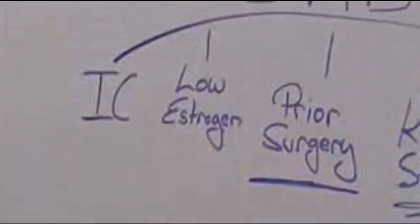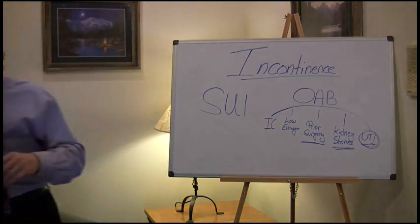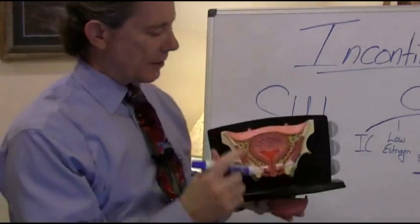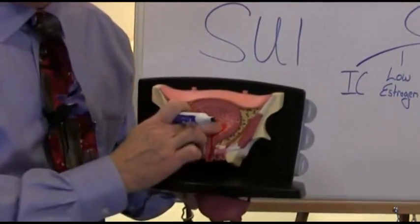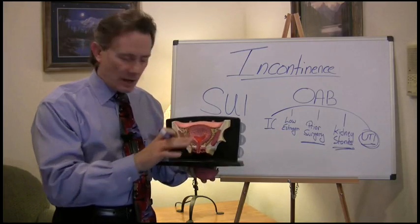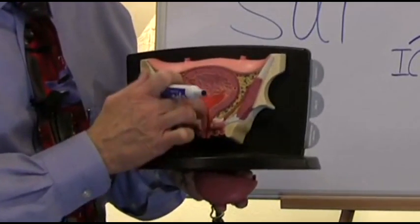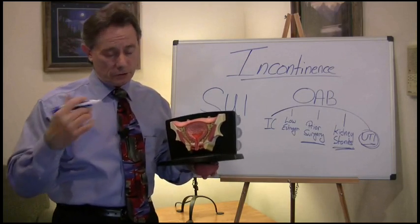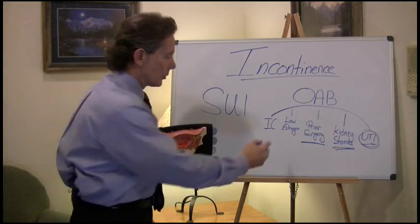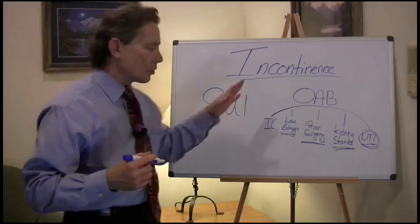So prior bladder surgery is another cause. Now, the other one is low estrogen, and this one may be a surprise to you. If we look at the anatomy of the bladder — I've got a sample of the bladder right here — you can see the red part of the bladder, what we call the trigone. That's the floor of the bladder, and that's an estrogen-dependent part. The urethra, the tube you void through, is also estrogen-dependent. So if you don't have enough estrogen and you've started to go through menopause, you're going to get some symptoms of overactive bladder — irritation, urge to go, and some frequency.